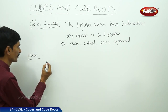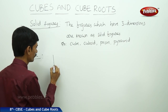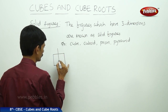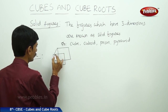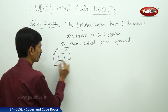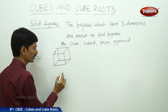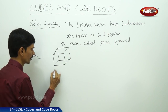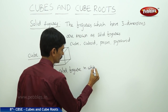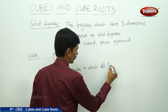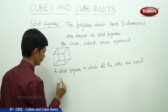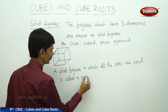Now, what is a cube? A solid figure in which all the sides are equal is called a cube. If one side is one centimeter, then all its sides are equal — that is called a cube.